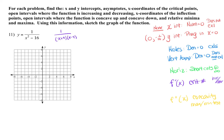Holes, denominator is zero and it cancels. I don't have any of these because nothing cancels. I do have vertical asymptotes. Those occur at X equals 4 and X equals negative 4. A horizontal asymptote. Well, my denominator is larger than my numerator, so that is going to be at Y equals zero.